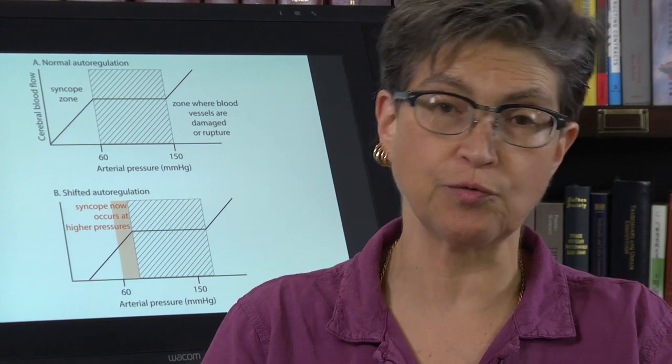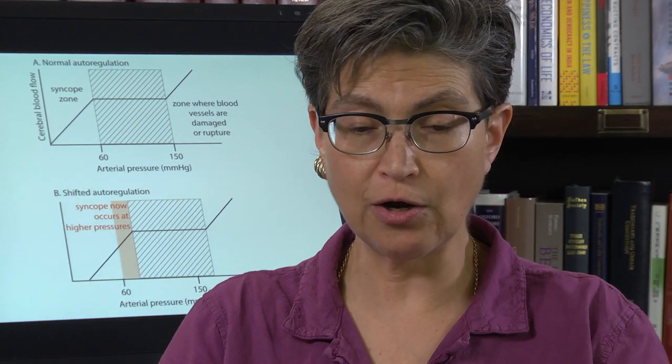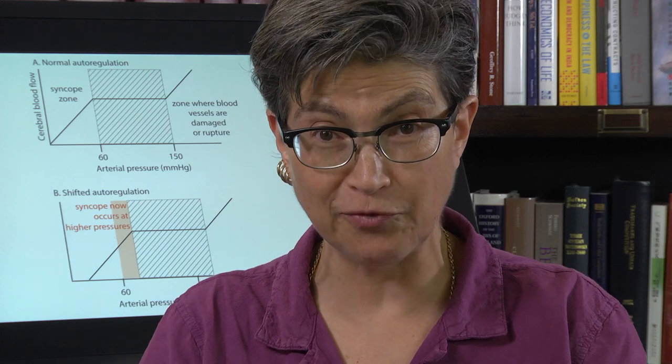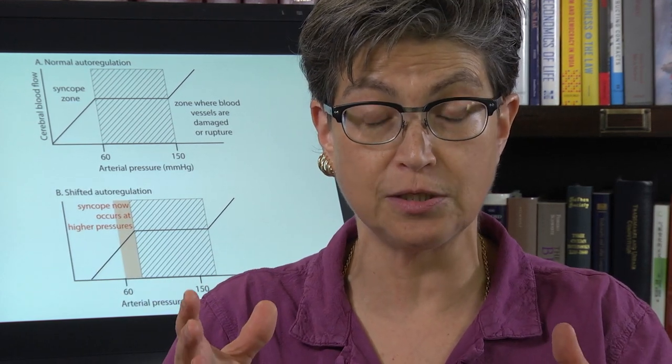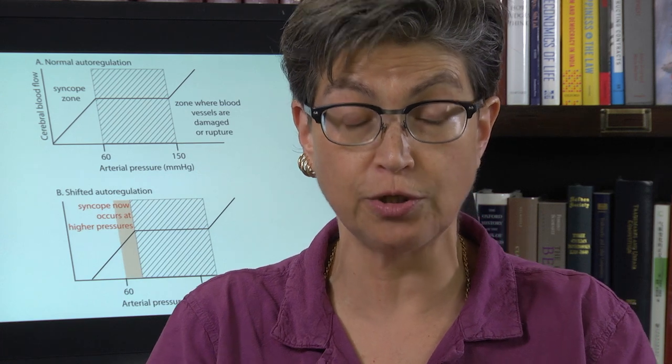Now, what we're going to do is we're going to go one step back. We've got autoregulation. Now we have to look at where are those blood vessels that are bringing that blood in to begin with. So we're going to look at the circulation of the brain, the circulation within the brain.